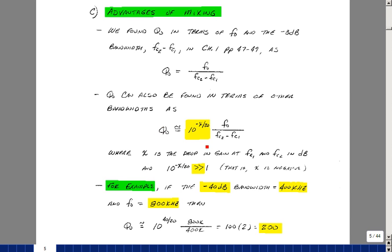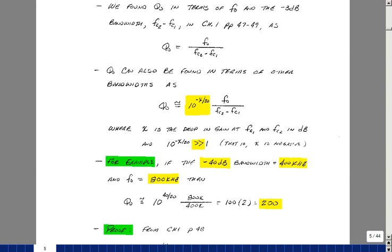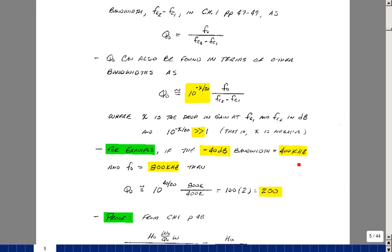What I want to show is that if you have some dB attenuation, this would be a negative number for x, if you take that number, divide it by 20, and raise it as the power of 10, basically taking the dB units off, then that multiplies the center frequency over the difference of whatever x was. Suppose I knew the minus 40 dB bandwidth was 400 kHz and the center frequency was 800 kHz. Then applying this formula, we would have 10 to the 2, which is 100, times f_0, but now divided by the minus 40 dB bandwidth. You wind up getting a Q_0 of 200.